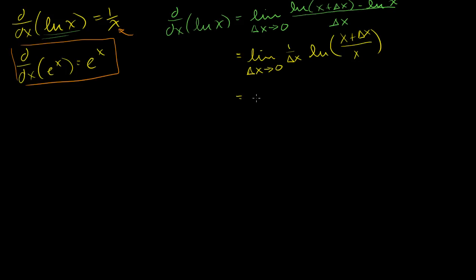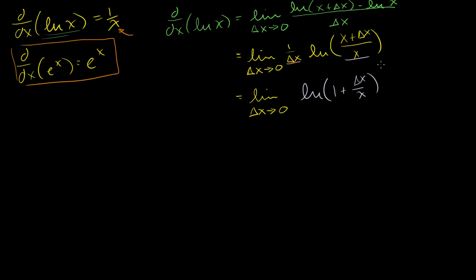So this is going to be equal to the limit as delta x approaches 0 of the natural log of the inside, where I divide everything by x. So x divided by x is 1, and then plus delta x over x. And I had this 1 over delta x sitting out here, and I can make that the exponent — that's just a logarithm property — so it becomes 1 over delta x as the exponent.